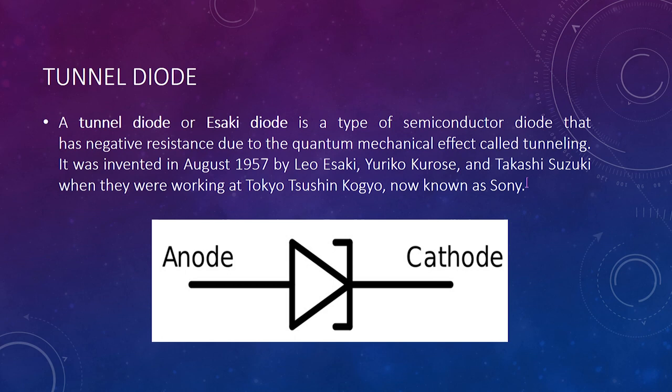Next is a tunnel diode. A tunnel diode, or Esaki diode, is a type of semiconductor diode that has negative resistance due to the quantum mechanical effect called tunneling. It was invented in August 1957 by Leo Esaki, Yuriko Kuros, and Takashi Suzuki when they were working at Tokyo Tsushin Kogyo, now known as Sony. Below we can also see a picture of a tunnel diode.